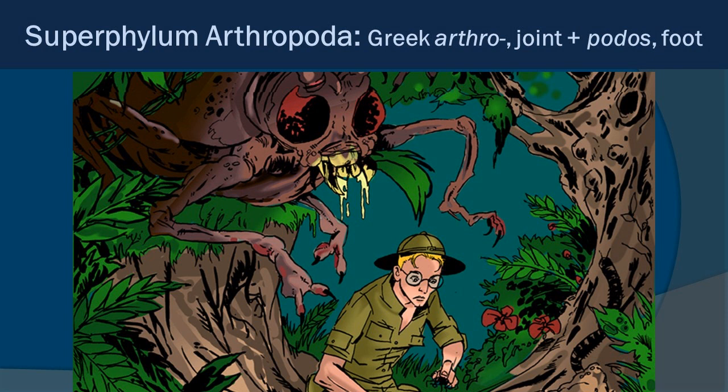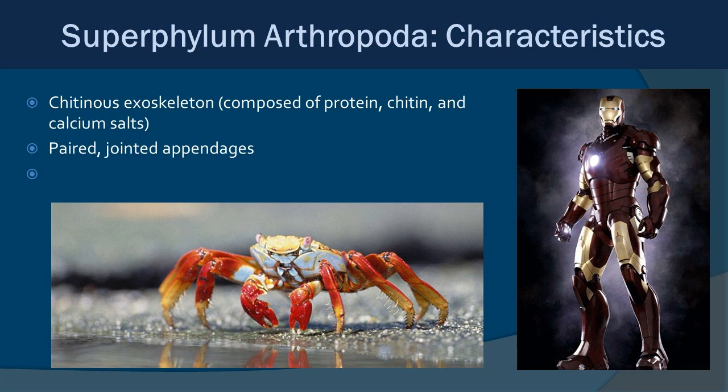Now it's time for superphylum Arthropoda. In Greek, 'arthro' means joint and 'poda' means foot, so 'jointed foot' is the loose translation. Arthropods are known for having a chitinous exoskeleton — a hard outer exoskeleton composed of protein, chitin, and calcium carbonate. Along with this suit of armor, they have jointed appendages so they can move and manipulate their environment. The major characteristics: a hard exoskeleton and jointed appendages.